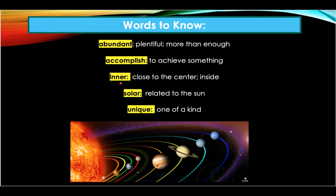Inner means close to the center or inside. An example of this is: the inner circles of the spider's web were smaller than the outer circles. Our next word to listen for is solar. Solar means related to the Sun. An example of this is: my mom has a solar powered wristwatch that works by using energy from the Sun.